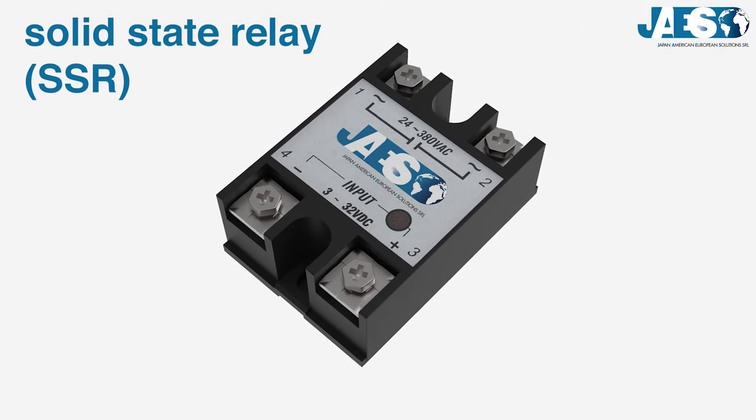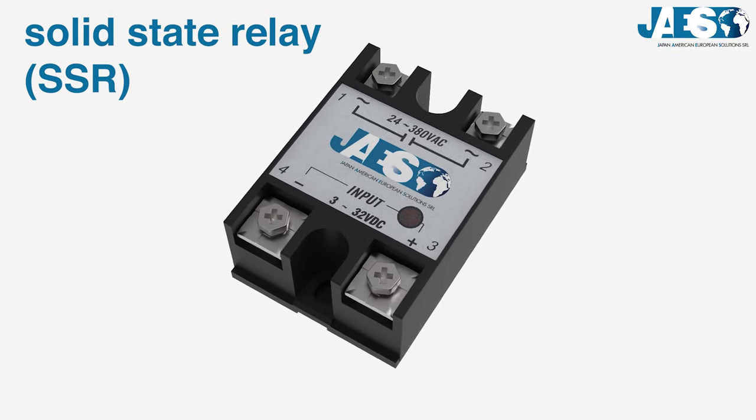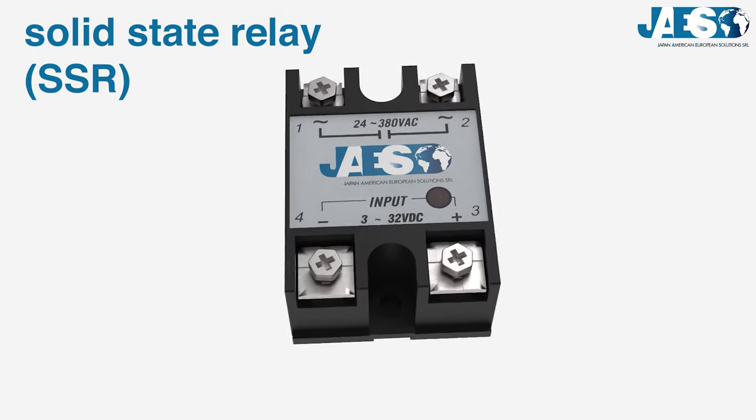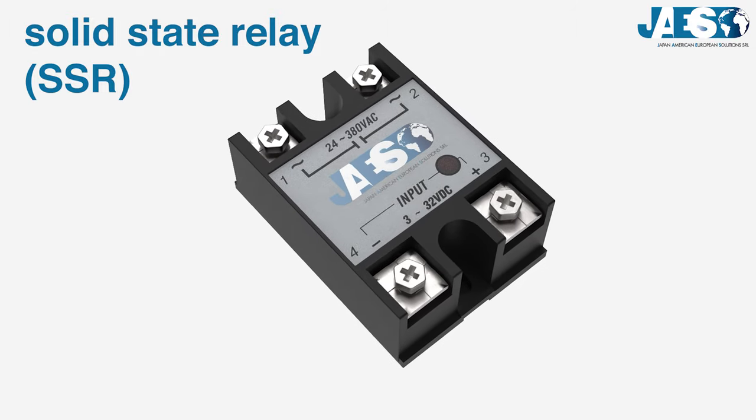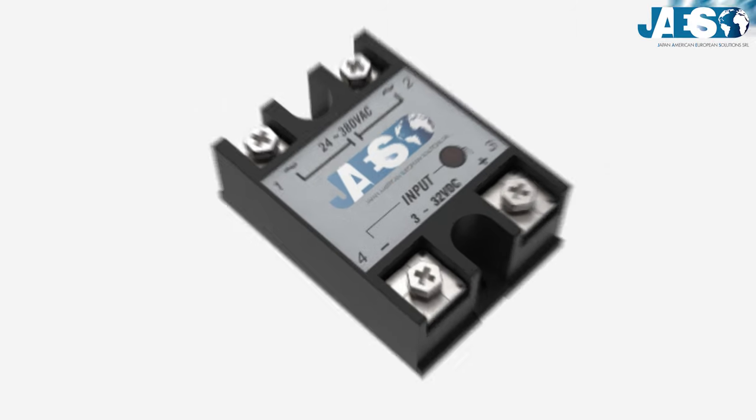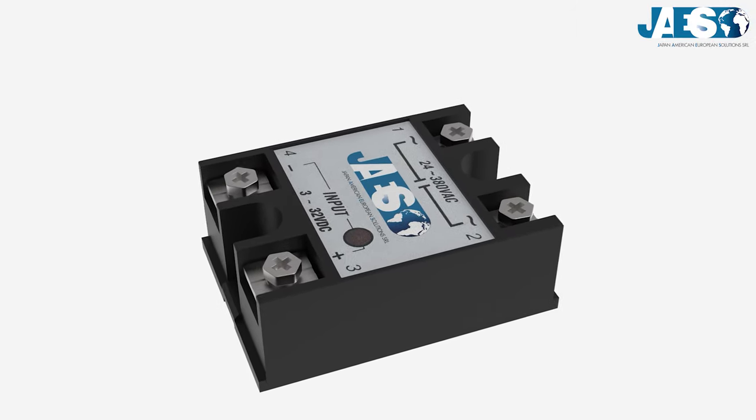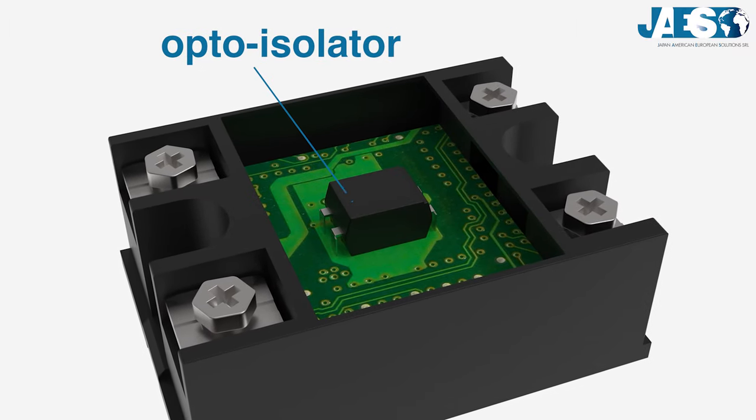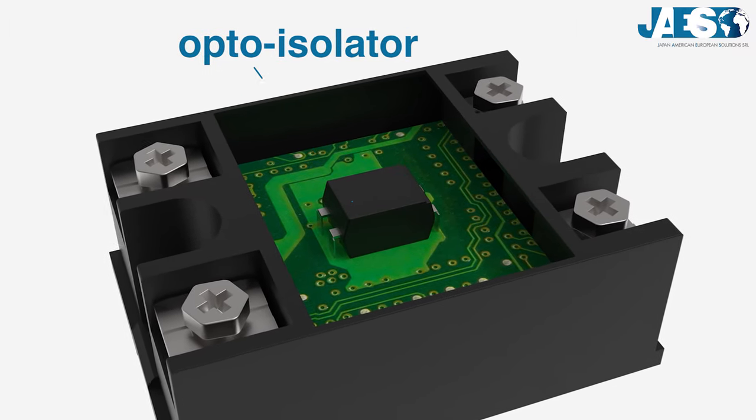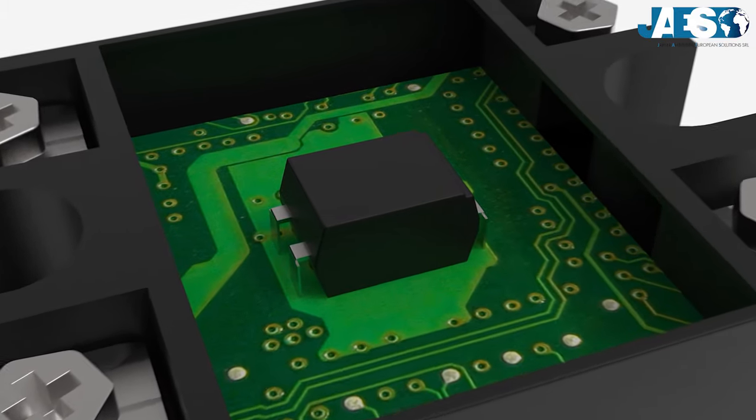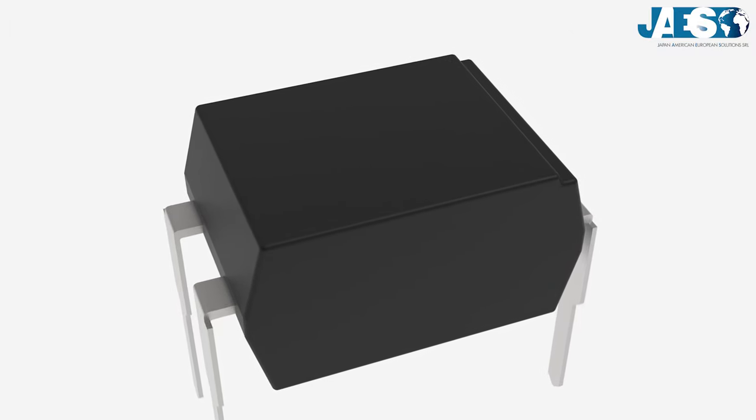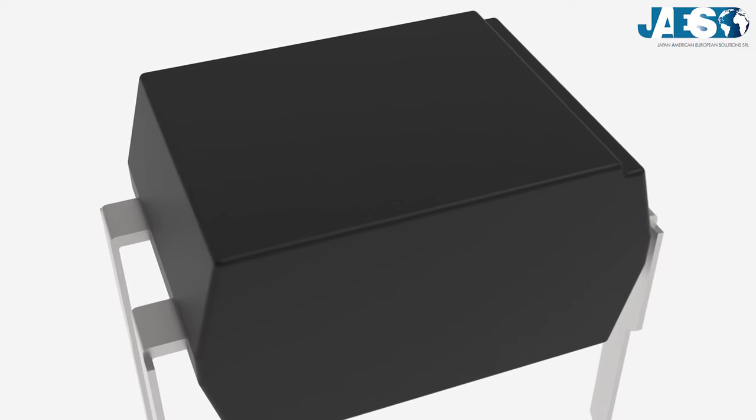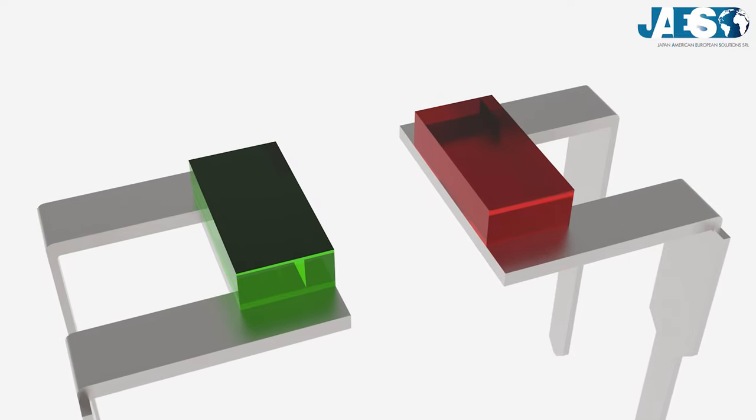A solid-state relay, by contrast, has no mechanical or moving parts, so it has the same function as electromagnetic relays without any internal physical movement. The solid-state relay is very common and consists of an opto-isolator, an electronic device that transfers a signal between two circuits while maintaining galvanic isolation between them. It is usually made by optically coupling a LED with a photosensitive element.